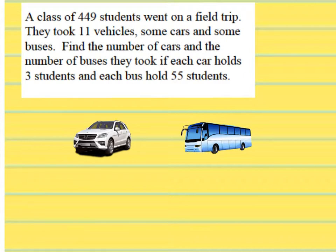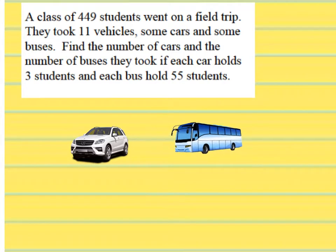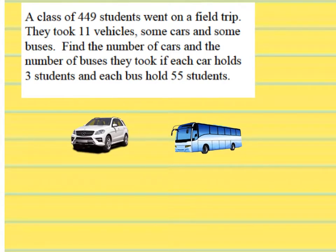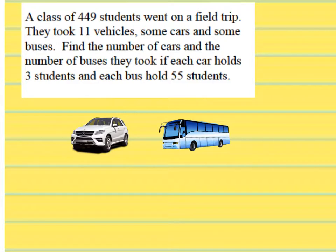You have to solve this by a system of equations, so you know that there are two equations to set up. Before you can do anything, you have to know that you are using cars and buses — those are your variables. What letter could you use to represent a car? C for car. And what letter would you use to represent a bus? B.